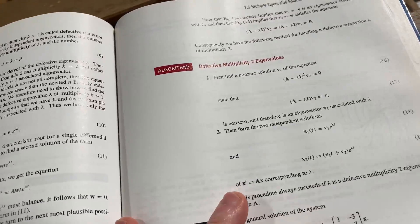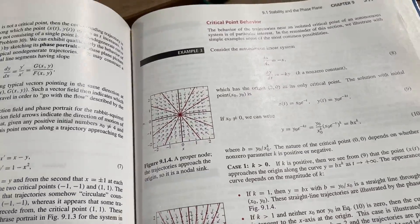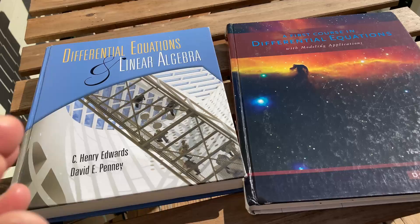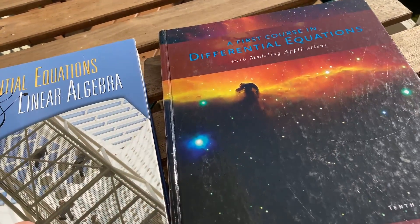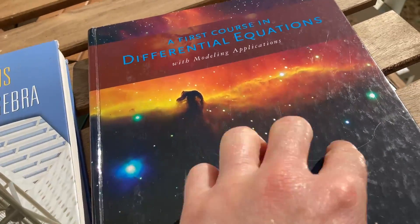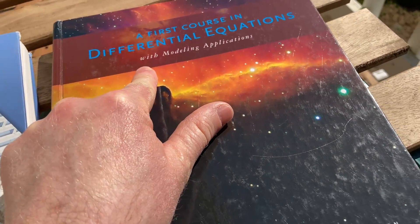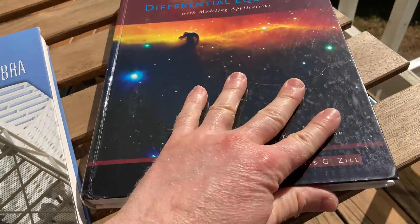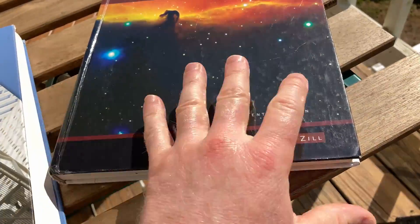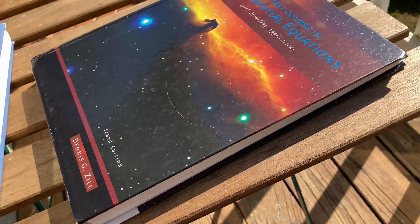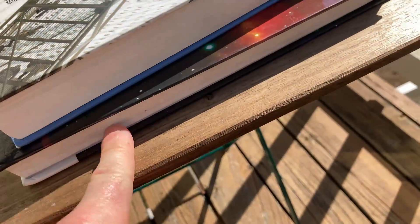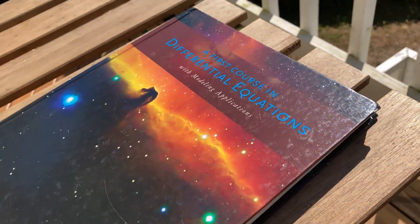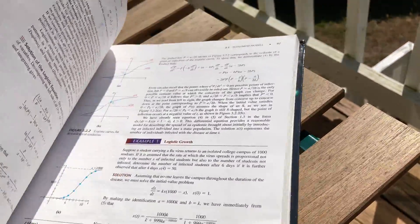I think it makes it a cool book to have just in case you want to see things you might not see in a DE course. Here I have another DE book I wanted to show you — this is A First Course in Differential Equations with Modeling Applications. If you look at the size difference, this one is a lot thinner; it's wider but thinner, so there are a lot fewer topics in this one. And this one's pretty good.